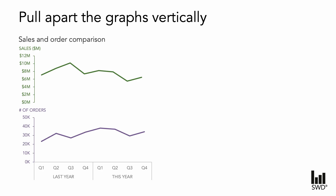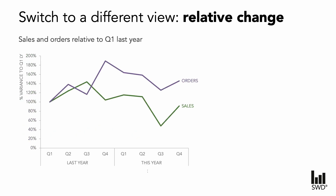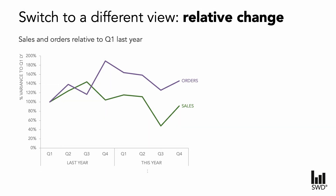We might ask ourselves if there's a better way to show this data. We could transform the numbers into relative increases and decreases and plot these directly on a common scale. In this example the first data point — Q1 of last year — is set at 100%, with each subsequent period displaying the percentage variance from that initial point. This allows us to compare these lines with one another. Here we can see that orders have remained relatively steady but sales appear to be declining.